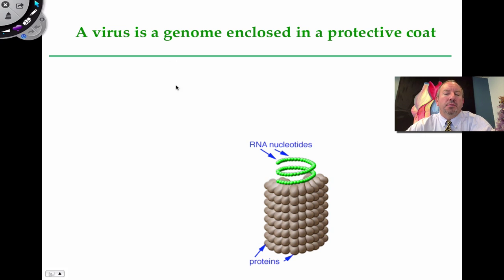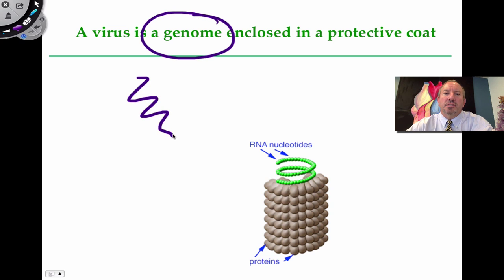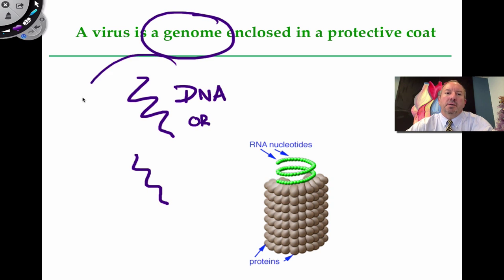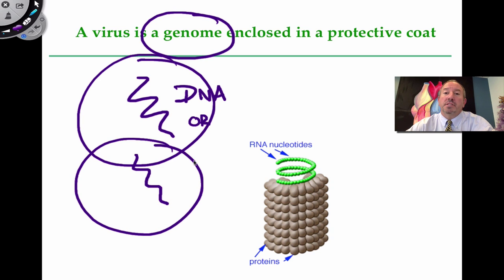The most important point is that a virus is really just a genome — either some kind of DNA or some kind of RNA — in a protective coat. So it's some kind of protein, or protein with an envelope, a lipid surrounding it. It's basically as simple as that.